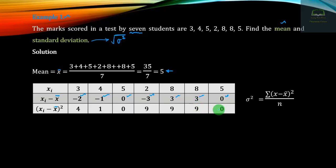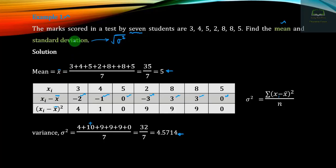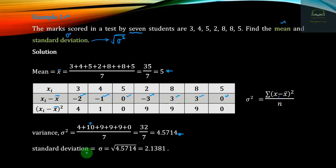Continuing with three squared equals nine, zero squared equals zero. We compute (x minus x-bar) squared for each value. Using seven observations, we find the variance sigma squared. The sum is one plus four, plus one plus zero plus nine plus nine plus nine plus zero, which gives us the variance.